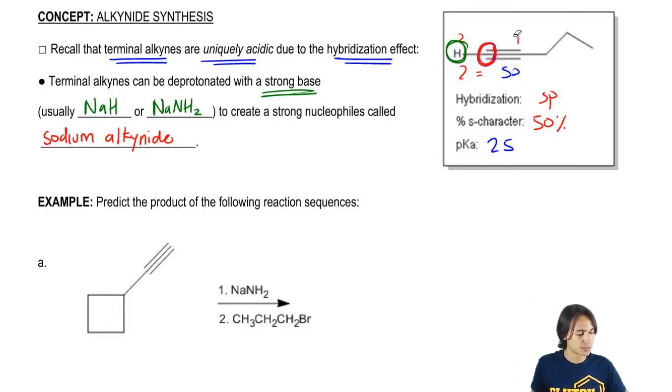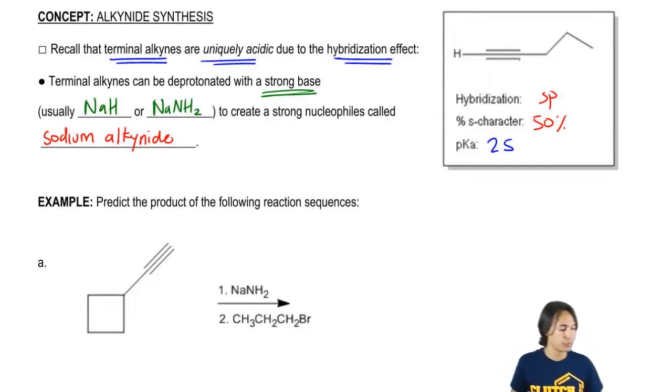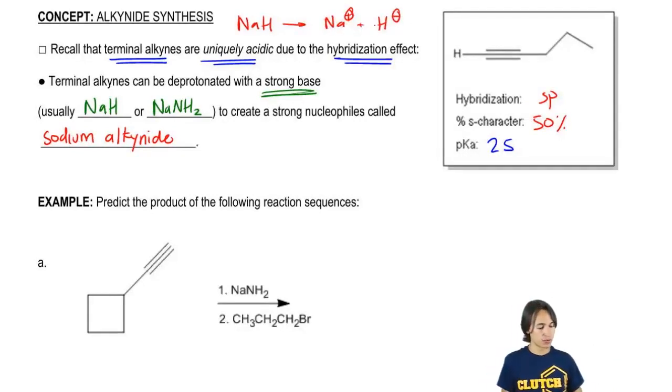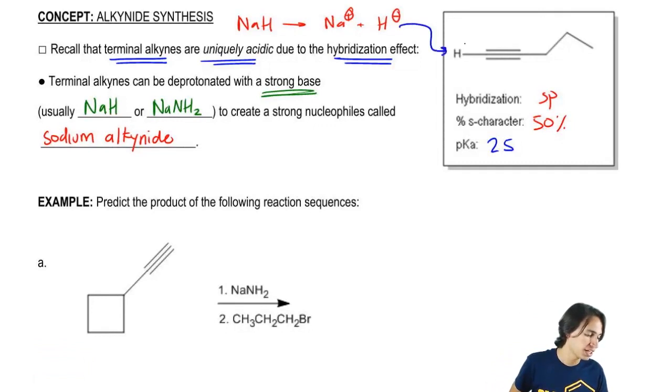And what the sodium alkynide looks like is it's just going to be a negative charge on that triple bond. So if I were just to erase some of this stuff and show you what the acid-base reaction would look like for this reaction, it would be that I have, let's say, NaH. Well, that's going to dissociate. That would dissociate into Na positive plus H negative. Now the H negative is what's going to react. That's the base. It's going to react with the H. So I would pull off the H and donate those electrons to the triple bond, giving the triple bond now a negative charge.